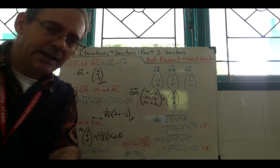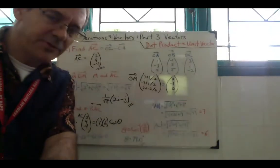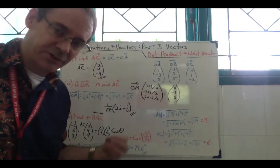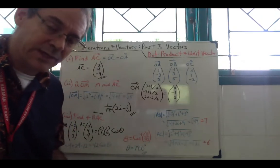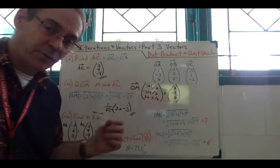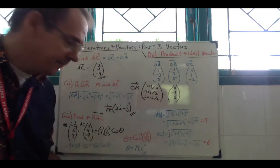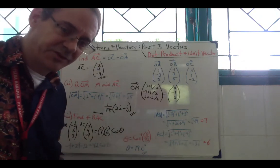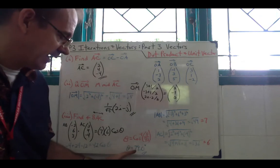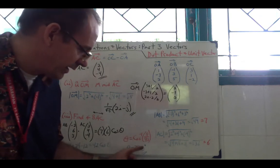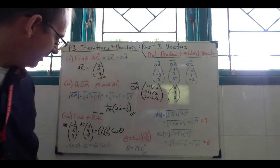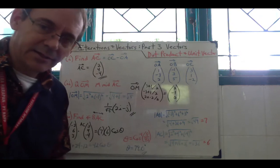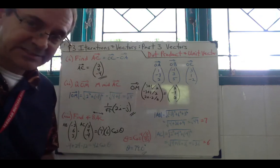Be careful to put the decimal point — Cambridge requires one decimal place for degree measurements. So angle BAC = 79.0°, even though the decimal is zero, you still need to include it.